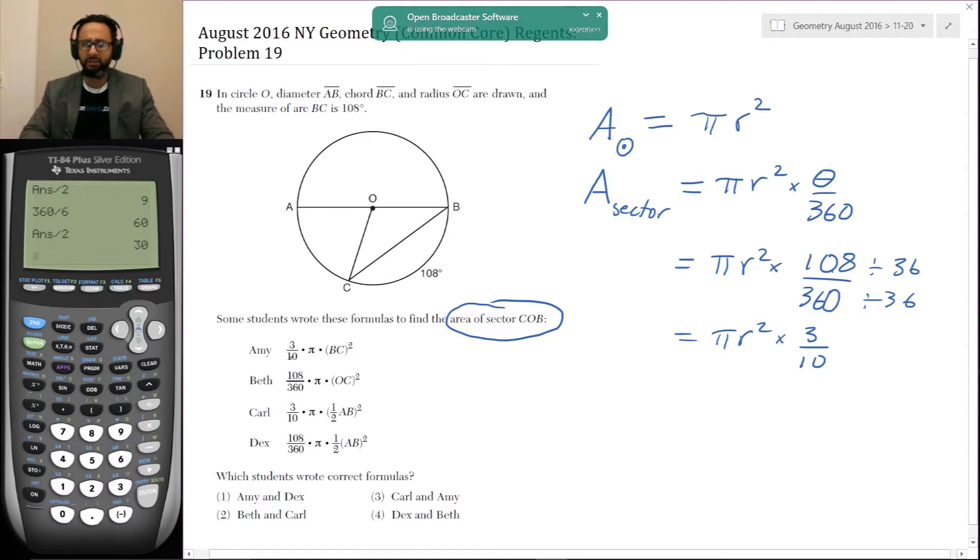Amy says 3 tenths times pi times BC squared. Now, while BC is the length of the chord, we need the length of the radius. So this is not correct. Even though in our example we used Amy as a possible right answer, it turns out that she's actually wrong. So Amy's answer is wrong, which makes choice one and choice three wrong. Even if we don't know how to do this, we now have a one in two chance of getting it right by guessing.